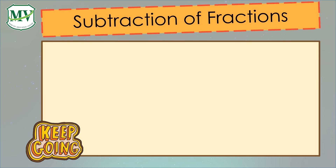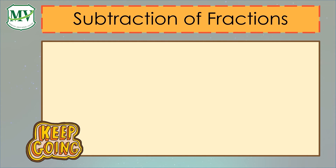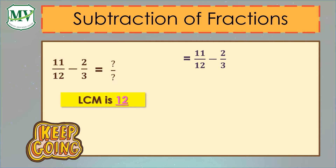Let's proceed to subtraction of fractions. Subtraction of fractions applies the same process as addition of fractions. Now let's subtract 2 over 3 from 11 over 12. They don't have the same denominators. We have to find the LCM of 12 and 3. The LCM of 12 and 3 is 12. So we will multiply 2 over 3 by 4 to make the denominator 12, which gives 8 over 12. The new subtraction sentence is 11 over 12 minus 8 over 12.